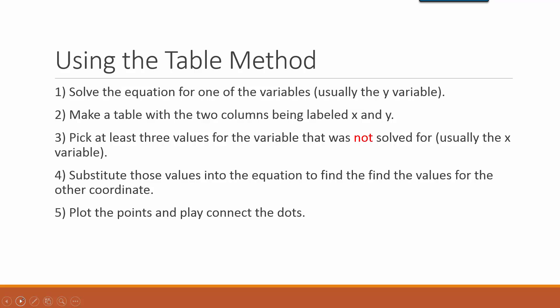To use the table method, we would solve the equation for one of the variables — normally that's the y variable. Then we will make a table with two columns and label those columns x and y. After that, we want to pick at least three values for the variable that was not solved for, again usually the x variable. Substitute those values into the equation for x, find the resulting y coordinates, plot the points, and play connect the dots.